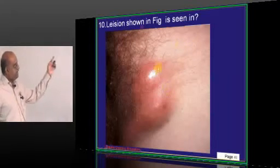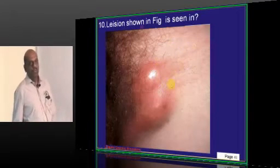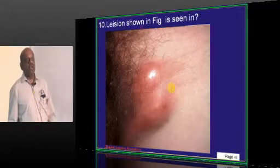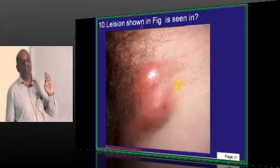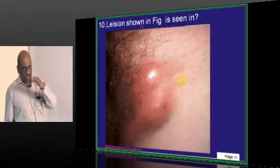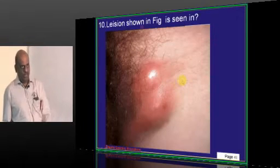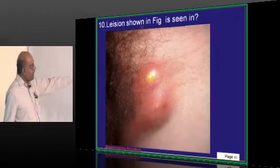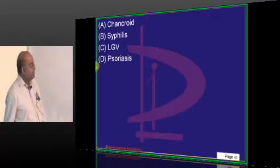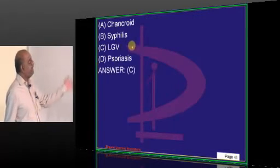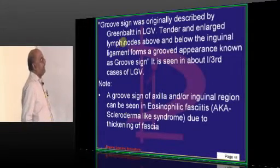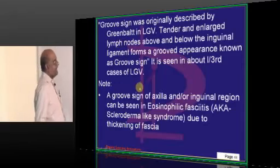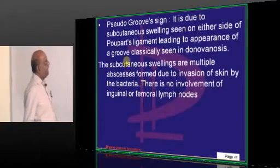What is this lesion? What you are seeing? It's called groove sign. It looks like a groove. Groove sign is due to the inguinal lymphadenopathy, which is a classical feature seen in lymphogranuloma venereum, which you have to basically remember.